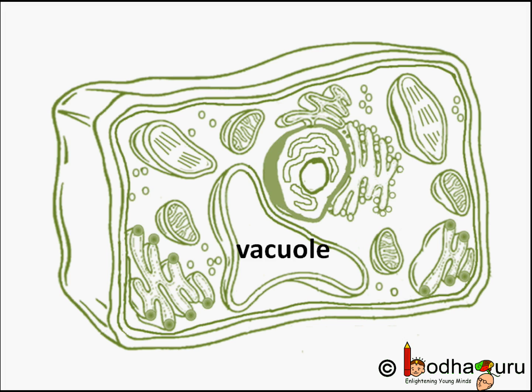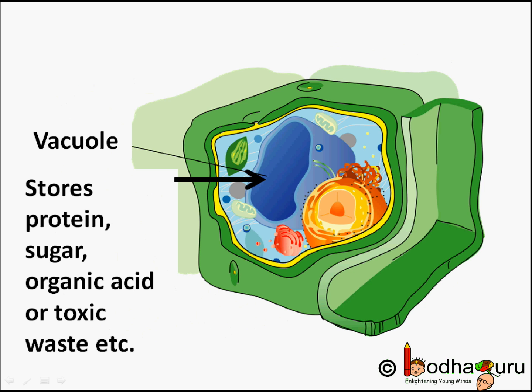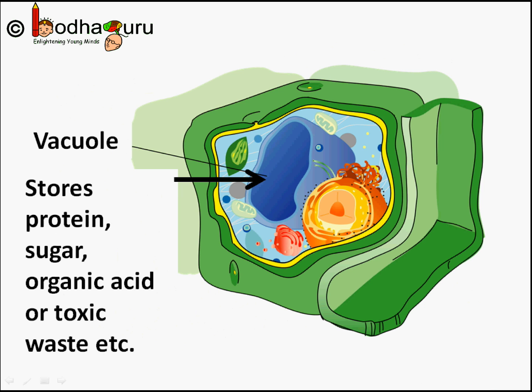In plant cells, vacuoles are full of cell sap and provide turgidity and rigidity to the plant cells. Vacuoles are also used for storing important substances like amino acids and sugar.